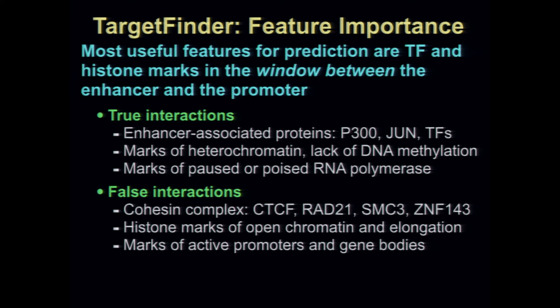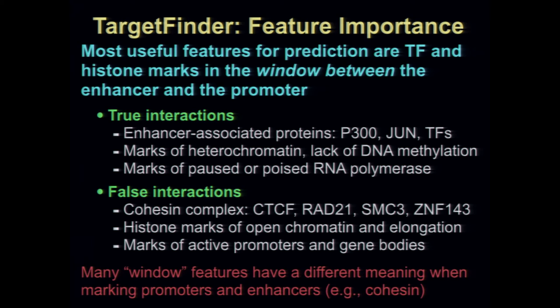There's evidence that these loops are actually connected insulators, giving information that there may be a different target gene and possibly a physical structure that prevents looping to a promoter further downstream. We also saw marks of open chromatin, elongation, active promoters and active gene bodies. Importantly, the meaning of these different features was different depending on whether we saw them at a promoter, an enhancer, or in the window. The cohesin complex is a negative predictor of an interaction when in the window, but a positive predictor if flanking the enhancer and promoter.